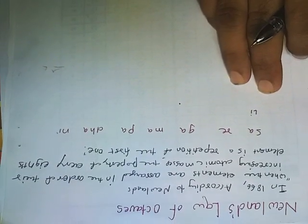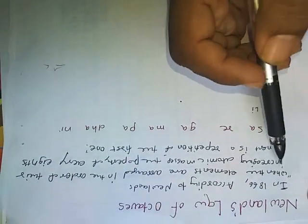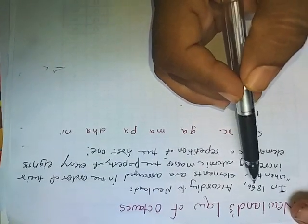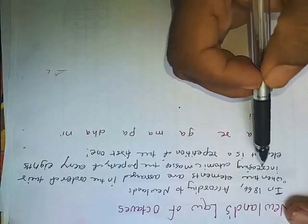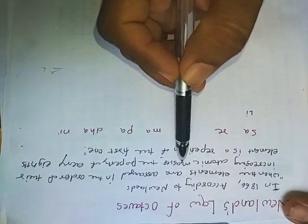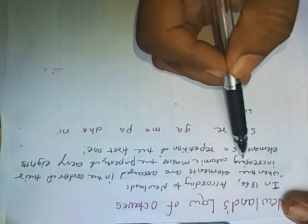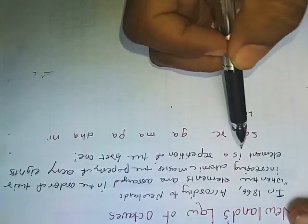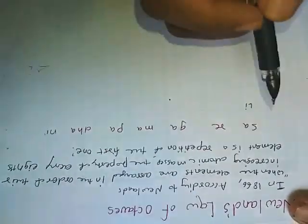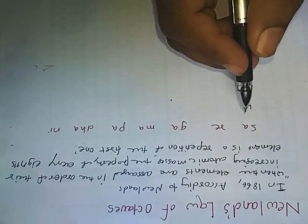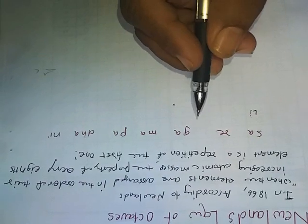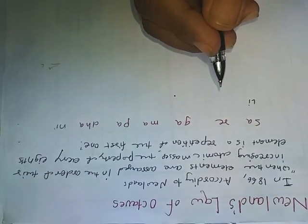Welcome back. Now we'll see our next topic, Newland's Law of Octaves. In 1866, according to Newlands, when elements are arranged in order of their increasing atomic masses, the property of every eighth element is a repetition of the first one.